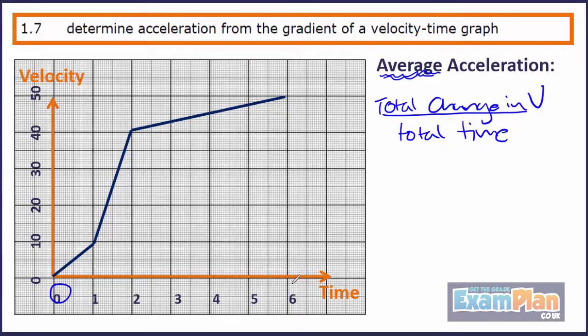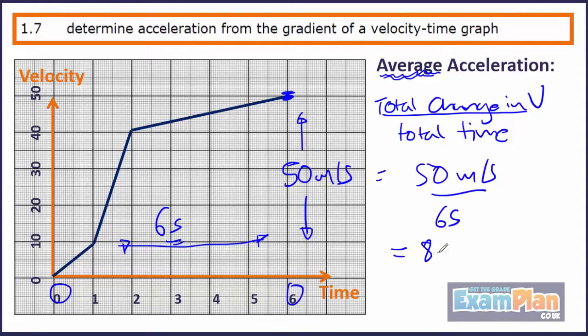Let's look at an example. The average acceleration from 0 seconds to 6 seconds is a change in the velocity of 50 m per second, divided by the time taken, 6 seconds, to give us an answer of 8.33 m per second squared.